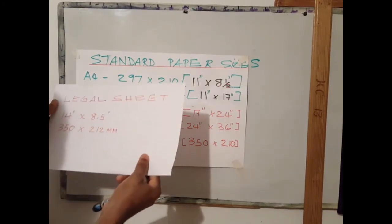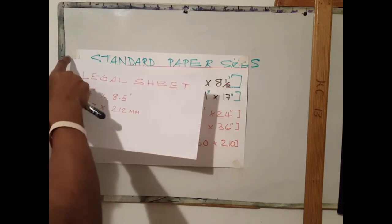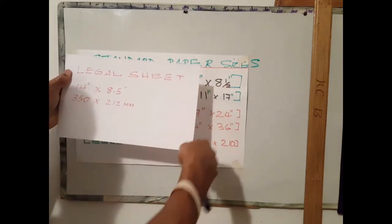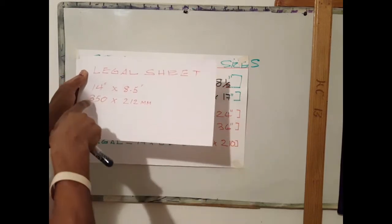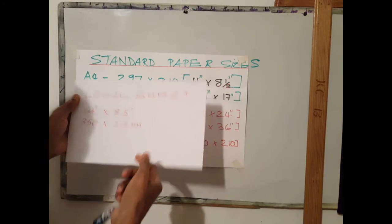This is a typical example of a legal sheet of paper. It has a length of 14 inches by 8 and a half inches or 335 by 210 or 212 millimeters.